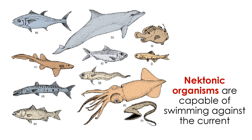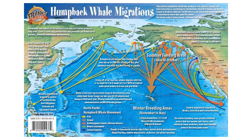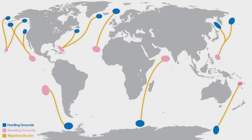Nektonic organisms include fish, sharks, rays, whales, dolphins, squid, and various other animals. Some of the most prolific swimmers today are baleen whales — humpback whales, blue whales, and gray whales make some of the longest journeys on our planet, migrating between their summer feeding areas and winter breeding grounds each year. A single gray whale alone may migrate up to 14,000 miles round trip.